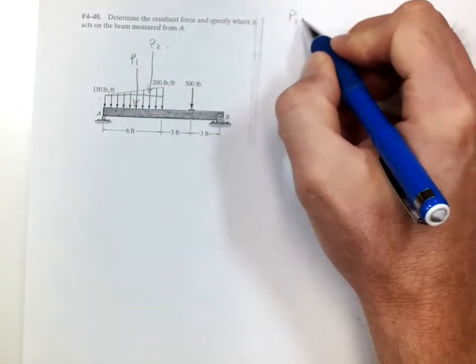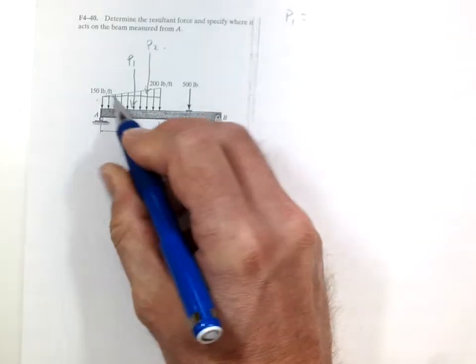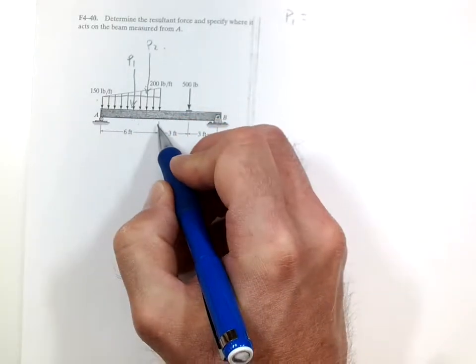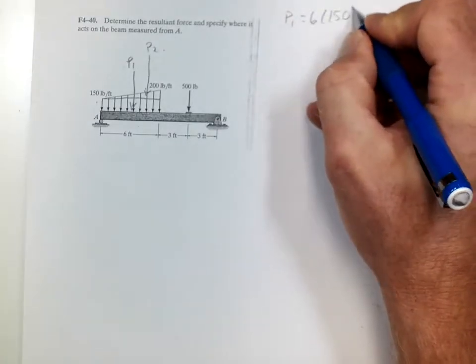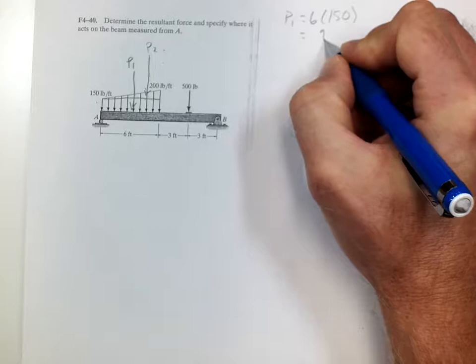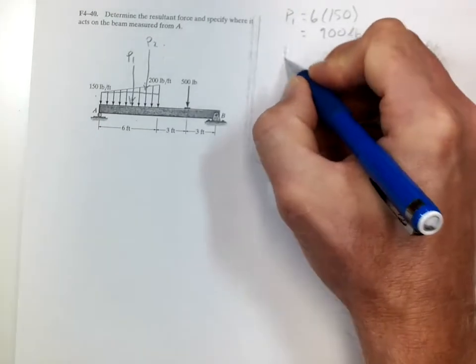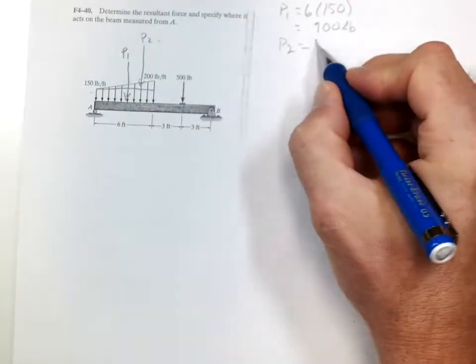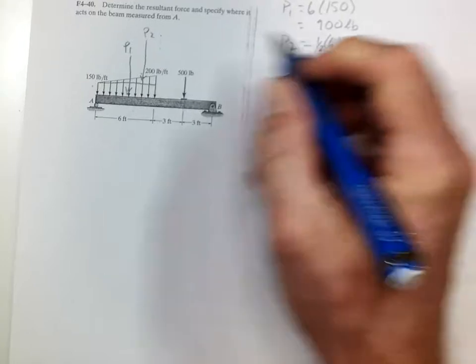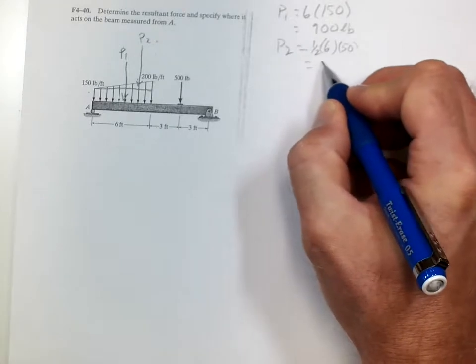So P1 is equal to 6 times 150. So P2 is equal to one-half, 6 times 50, and that equals 150.